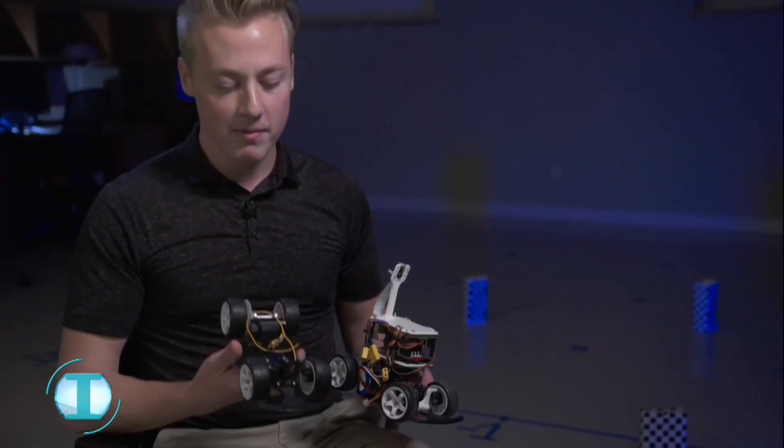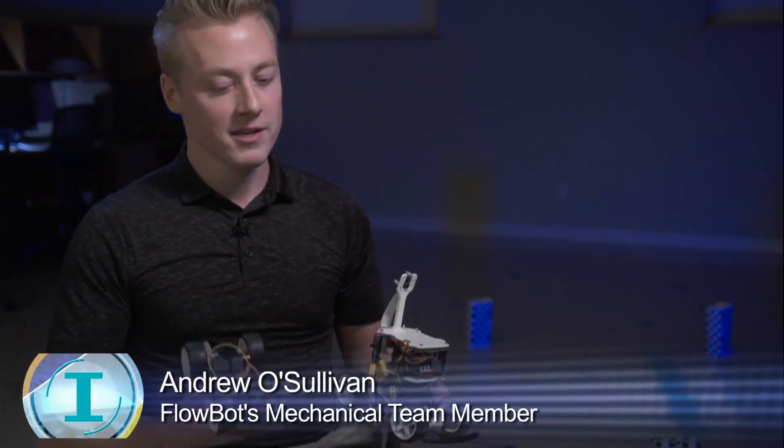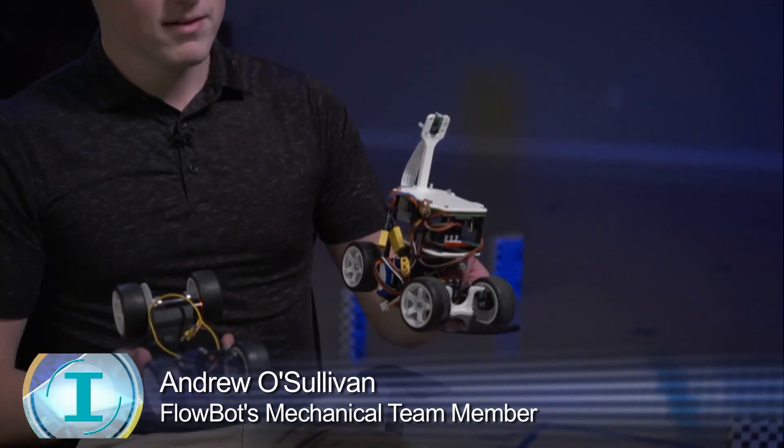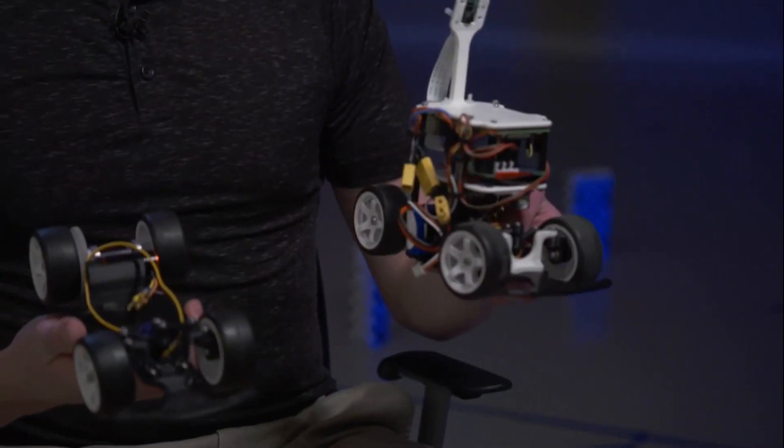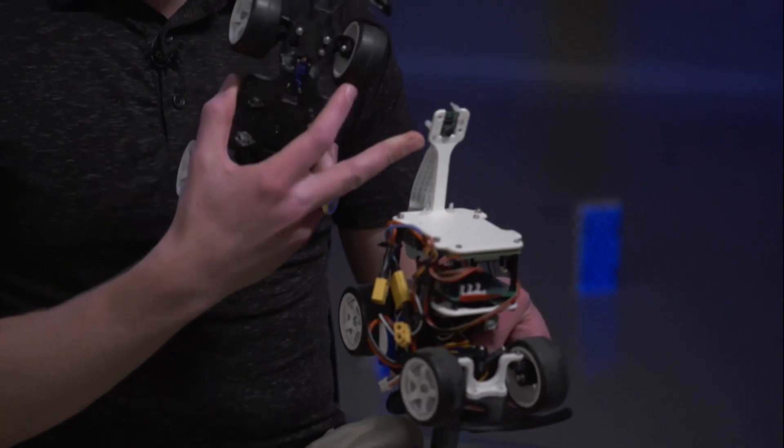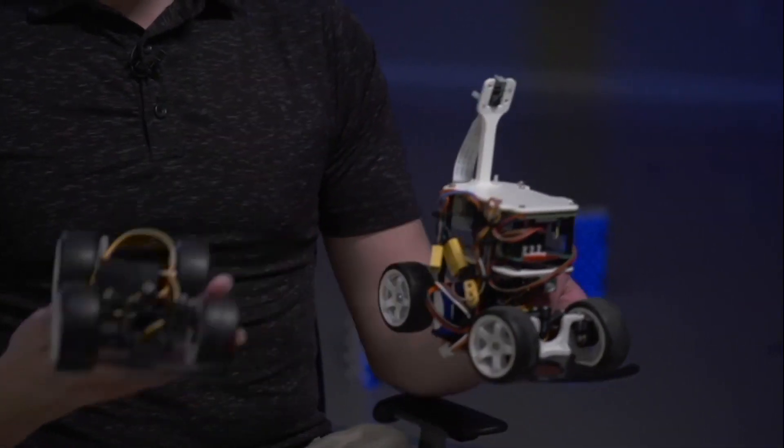What we were building was PyCar, which is a platform on which to build autonomous technology. So this is a PyCar, and this is FlowBot. So on top of the PyCar, we built the FlowBot platform, which only uses a camera to sense its environment.